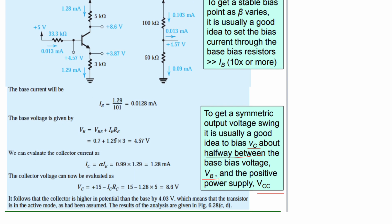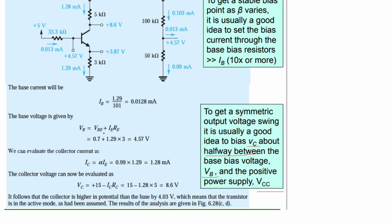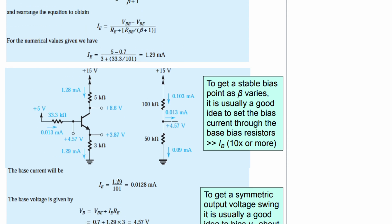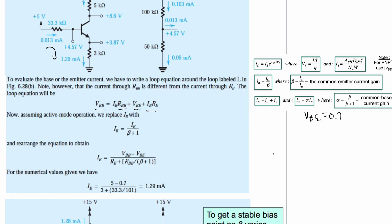The base voltage is given by this. So it's going to be VBE plus IE times RE, and we can evaluate the collector as this. This is also an equation that's in the notes link below the like button. The collector voltage can be now evaluated as the following once we plug in some values. For our VC that we have, if it's not up here, it'll be in the notes as well.